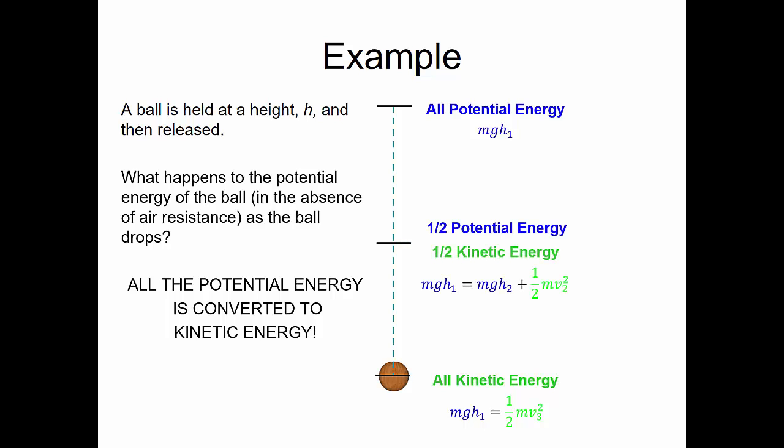Note that if we looked at what the energy was like halfway down the drop, half of the potential energy is still there, and half of it has been converted to kinetic energy. So at the halfway point, our equation would be: mass times gravity times the initial height equals mass times gravity times height 2, plus one-half the mass times the final velocity squared.